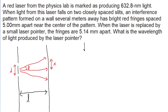Recall that the equation for constructive interference says that D, the distance between the slits, multiplied by the sine of theta, is equal to M, the order of the fringes, multiplied by lambda, the wavelength of the light.